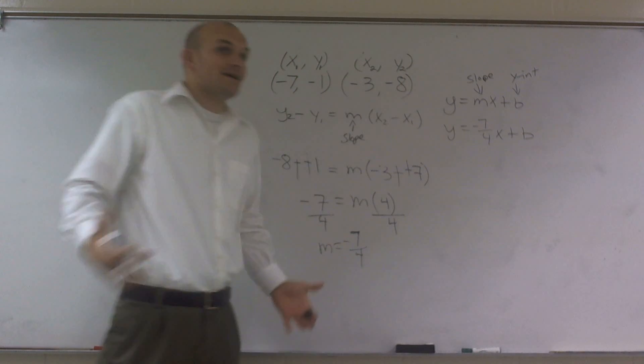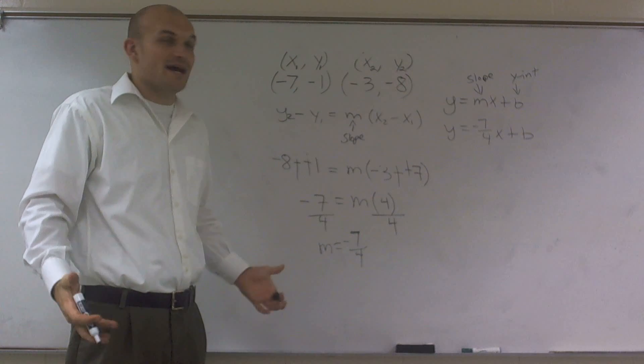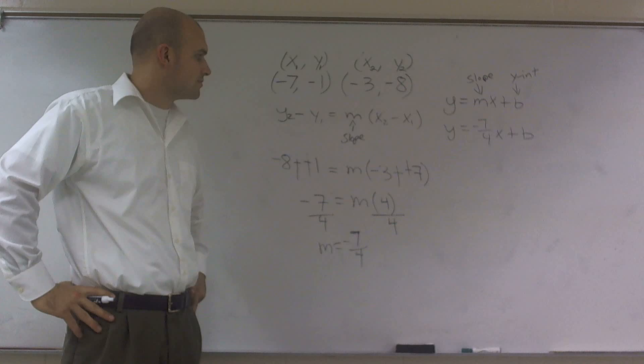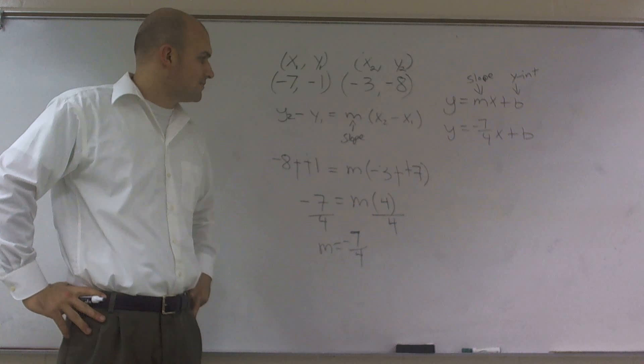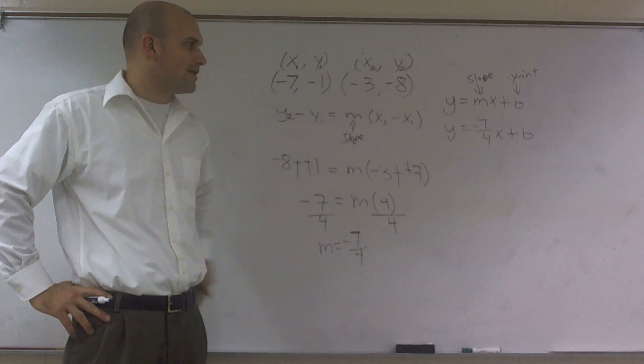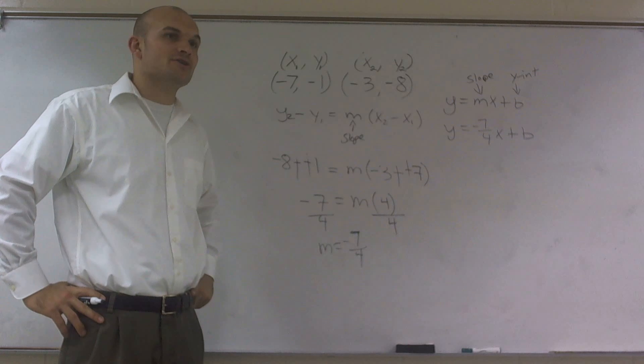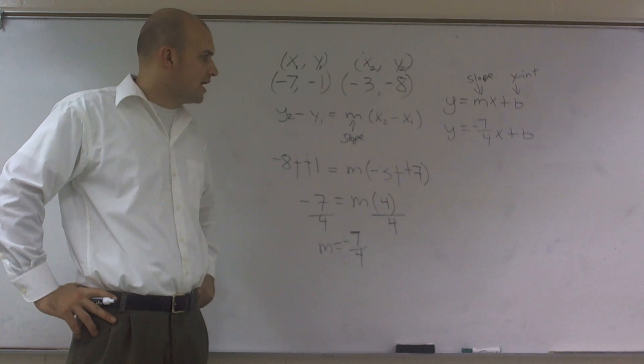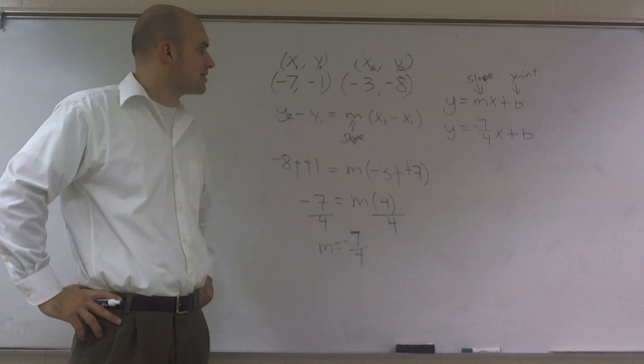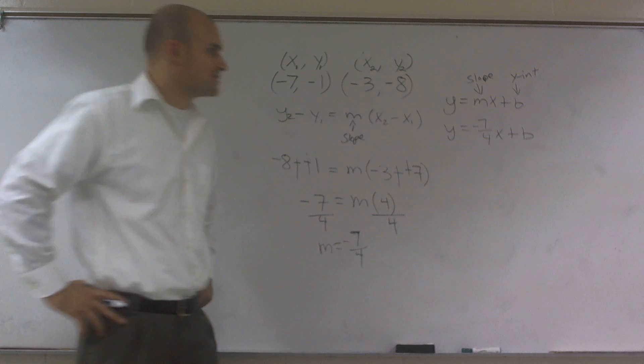So therefore, my equation right now I have y equals a negative 7 fourths x plus b. Now, I don't know what my y intercept is right now, right? I only have what my slope is. Well, what we can do now is we can use this exact same equation again. But now what I'm going to do is I'm going to plug in one of my points.